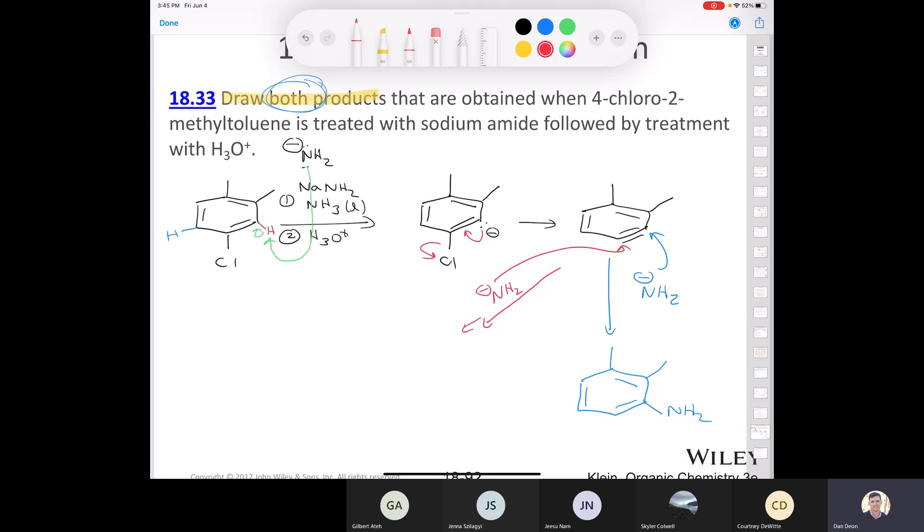then after, of course, after the formation of the carbanion and the extra step, which I'm not drawing the mechanism for. Okay, so there is an extra step, right? Because you need H3O+ in the end. For the red one, you would end up with this regioisomer here. So you'd end up with two methyl groups here, your aromatic ring. There you go. So these are the two possible products that you would end up with.